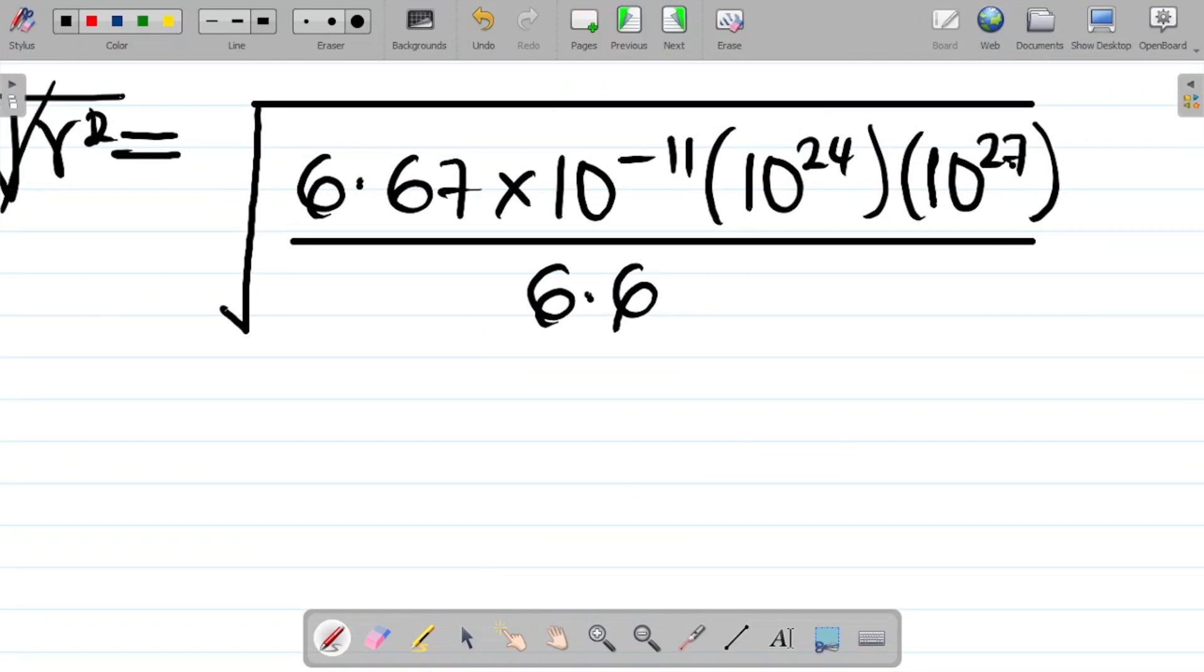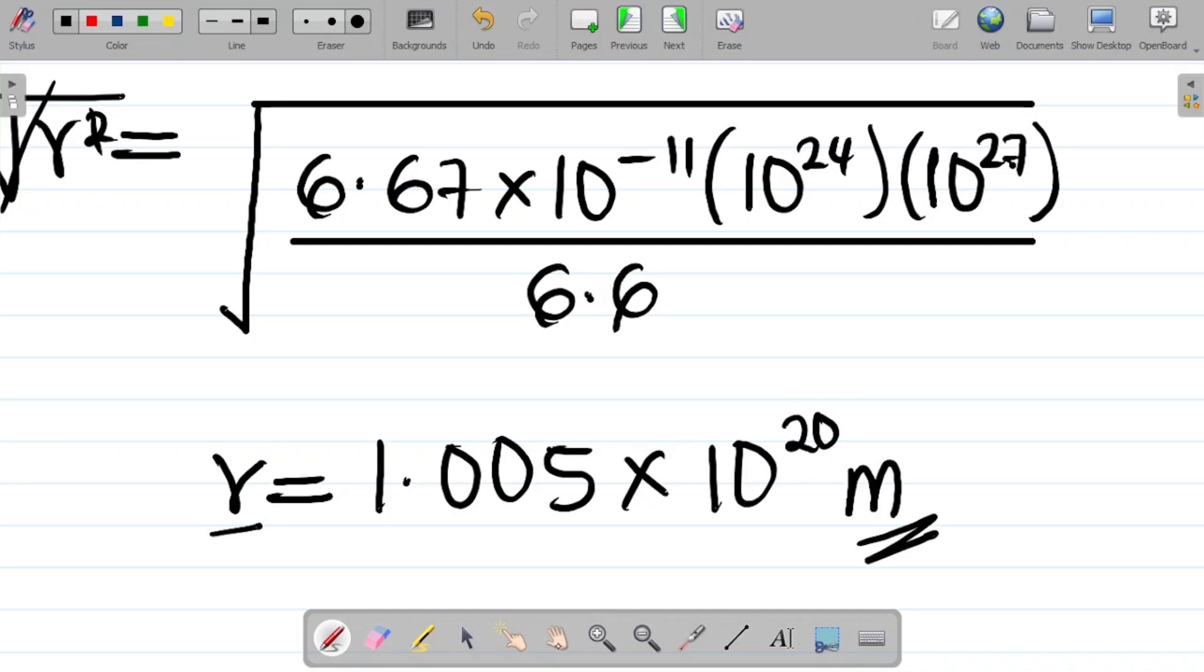From here, I will have that R equals, so get your calculator and punch this correctly. Square root of 6.67 times 10 to power minus 11 times 10 to power 24, your first mass, times 10 to power 27, your second mass, all divided by 6.6. If you do that and take your square root, your answer gives you 1.005 times 10 to power 20 meters.